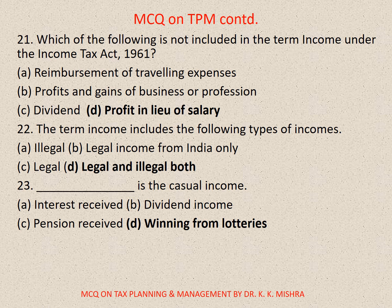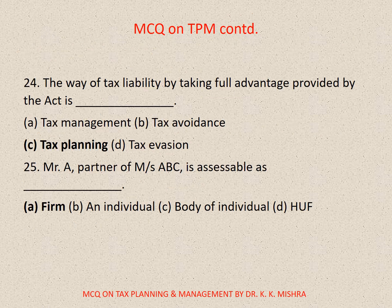Question 23 relates to casual income. The options include A. Interest received, B. Dividend income, C. Pension received, D. Winning from lotteries — with winning from lotteries being the casual income answer. Question 25: The reduction of tax liability by taking full advantage provided by the tax law is — the correct option is C. Tax planning.